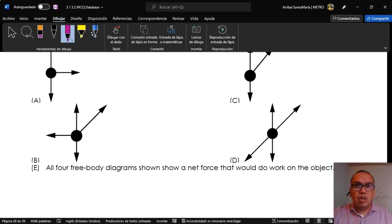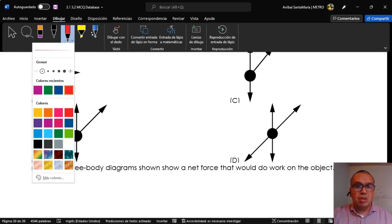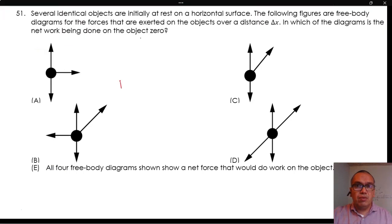For the net work to be equal to zero, the resultant force must be zero. The only way that this is true is that all components in the horizontal and vertical directions cancel each other out.